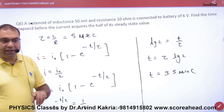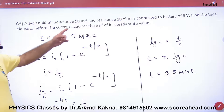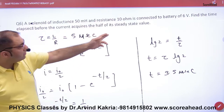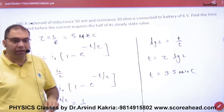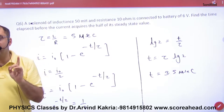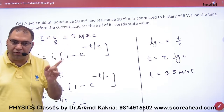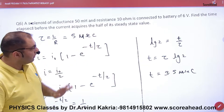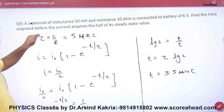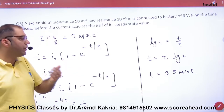A solenoid of inductance L and resistance R is connected to a battery of 6 volts. This is an RL circuit with DC supply. Find the time elapsed before the current acquires half of its steady value.